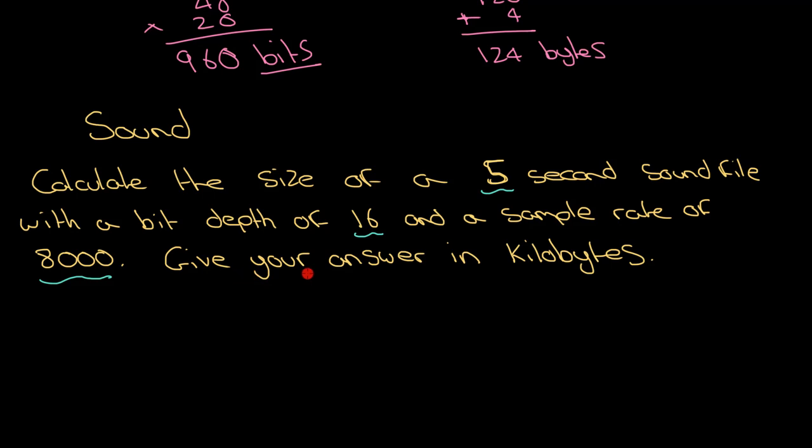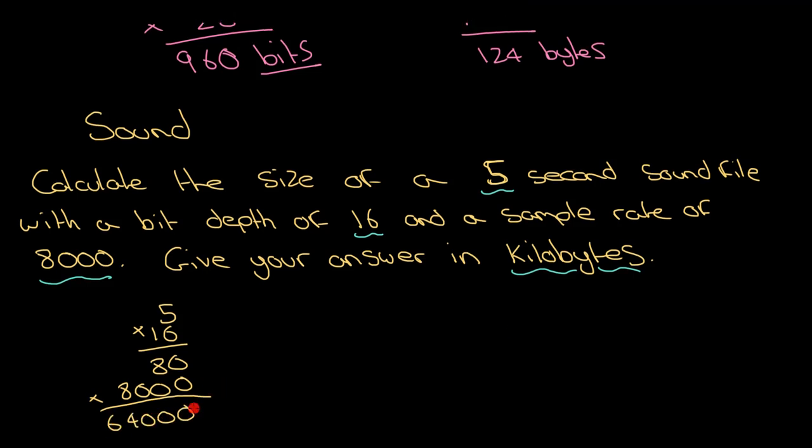What do we do? Yeah, multiply them all together. But give your answer in kilobytes - that is going to be something we're going to have to deal with. So 5 times by 16, let's do that first, that is going to be 80. Then I've got that times by 8,000, so that's going to be 64,000. So now I'm dealing with 64,000 bits, because this is a bit depth of 16.